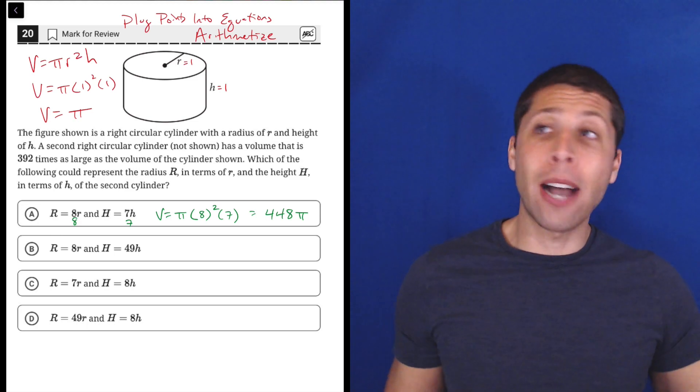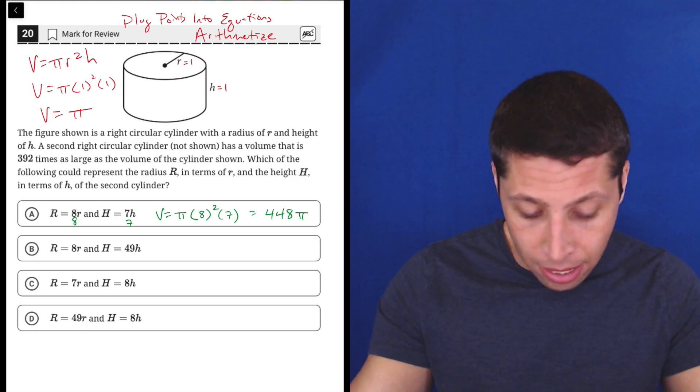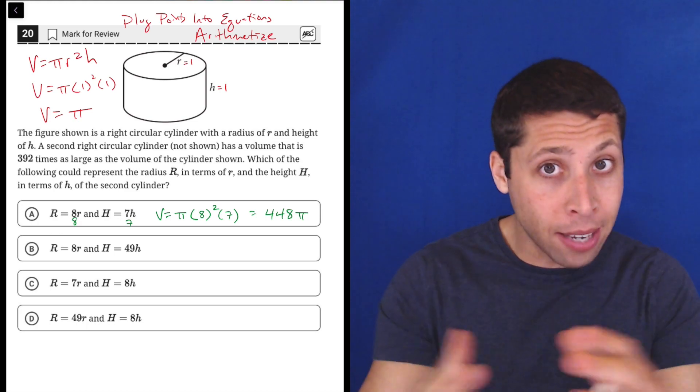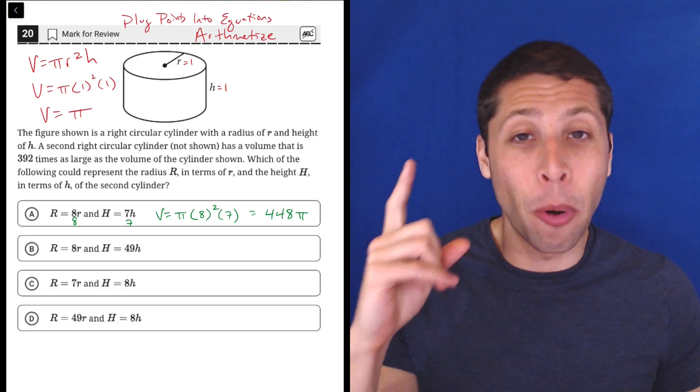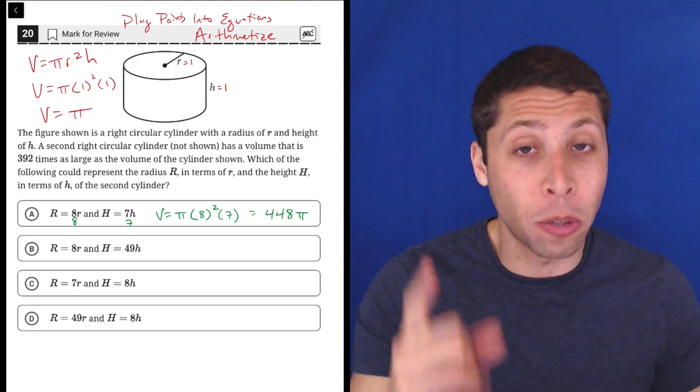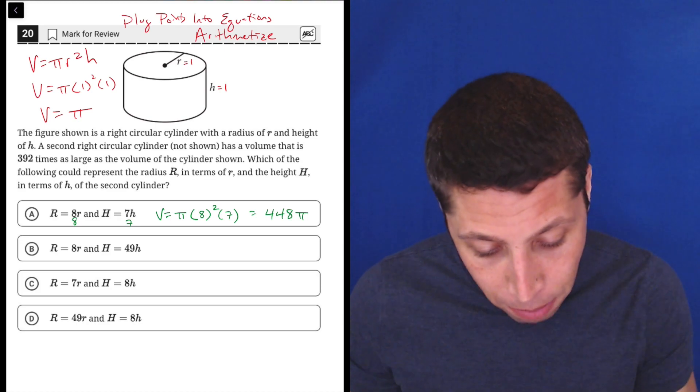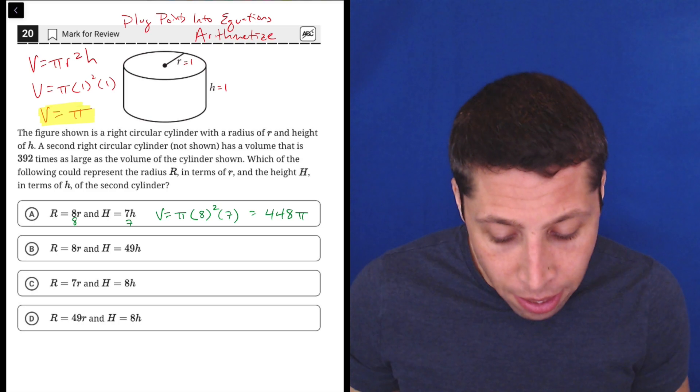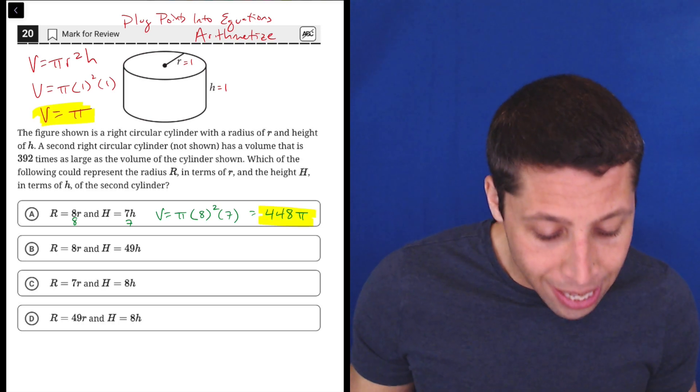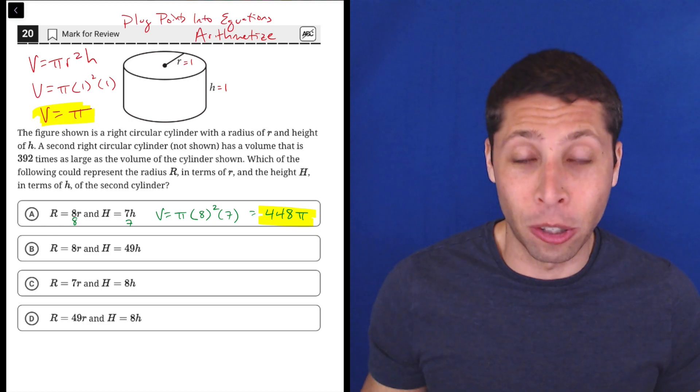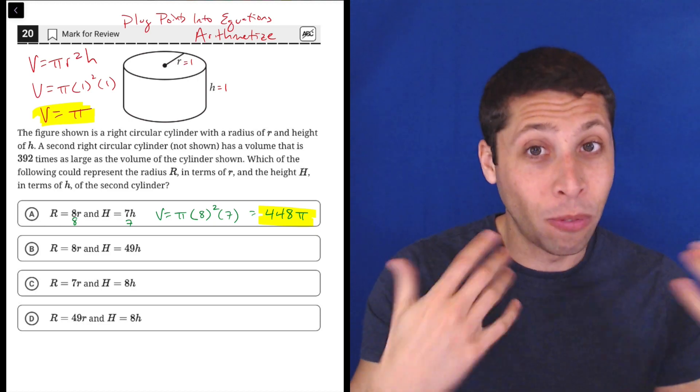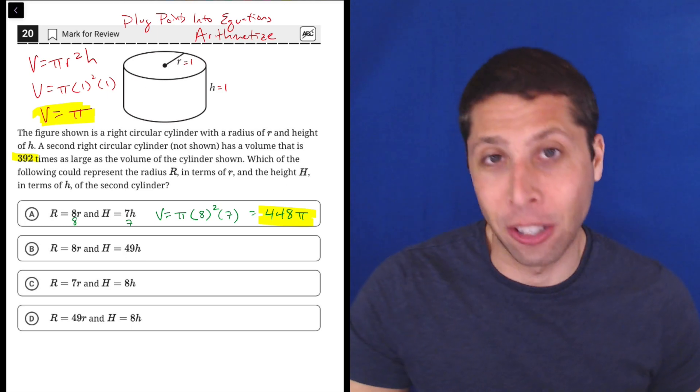And I'm not going to multiply the pi out because I don't want to deal with the decimal. I want to see what that relationship is between the two volumes. And now it's very clear why picking one as both the radius and the height of the small cylinder was a smart move. Because I can now compare really easily that this is 448 times bigger than the small cylinder. The big cylinder in choice A is 448 times bigger, but we need it to be 392.